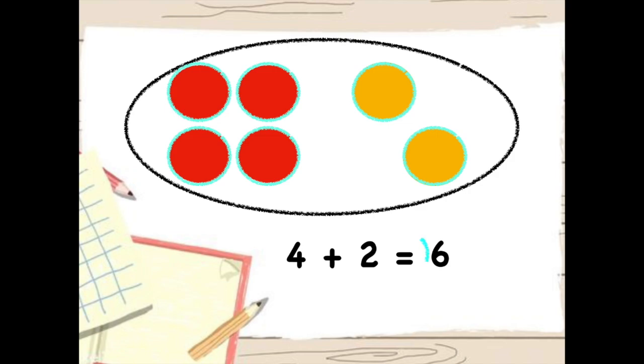This symbol is called the equal sign. In this equation, the equal sign means that four plus two is the same as six. In this problem, the number six represents the sum. Say that word with me. Sum. Sum is another word for total.